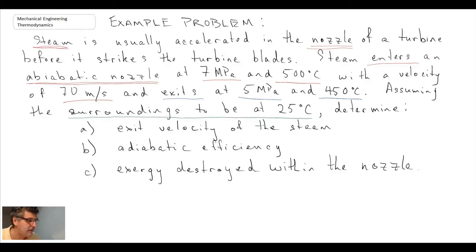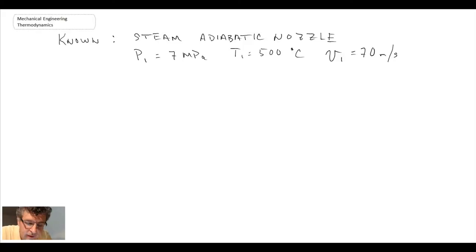Let's begin the problem by writing out what we know and what we're looking for, and then we'll work our way through. So the known information: we're dealing with steam as the working fluid and it is an adiabatic nozzle. State information: P1 is 7 megapascals, T1 is 500 degrees C, and velocity 1 is 70 meters per second. Now we're going to have to use the steam tables. Right now we do not know if that is compressed water, if it's saturated, or if it's superheated, but we'll extract that information when we go into the steam tables.